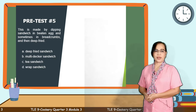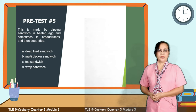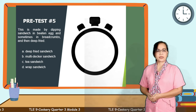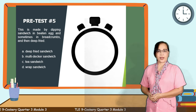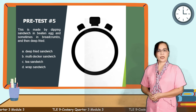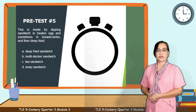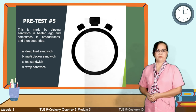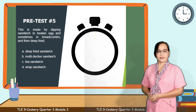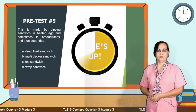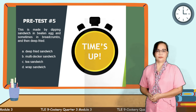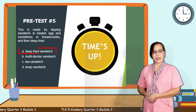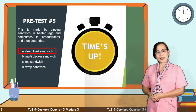Question number 5: This is made by dipping a sandwich in beaten egg and sometimes in breadcrumbs and then deep-frying it. Is it letter A, deep-fried sandwich? B, multi-decker sandwich? C, tea sandwich? Or letter D, wrap sandwich? Time starts now. Time's up! The answer is letter A, deep-fried sandwich. You got it right!